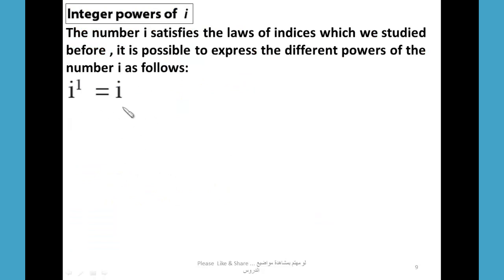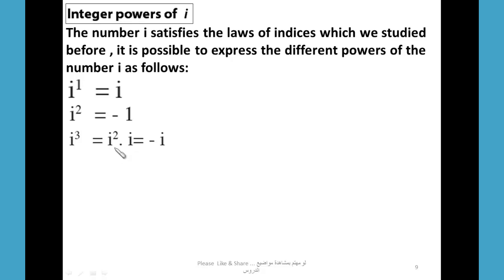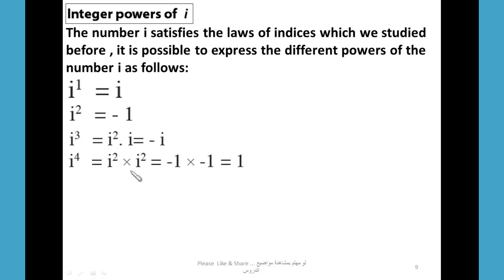i¹ = i. i² = -1. i³ = i² × i; since i² = -1, we get -1 × i = -i. So i³ = -i. For i⁴, we write it as i² × i² = (-1) × (-1) = 1. So the simplest form of i⁴ is 1.